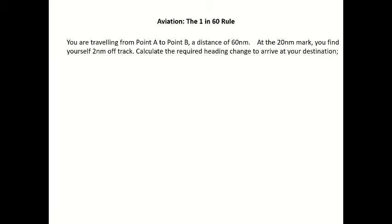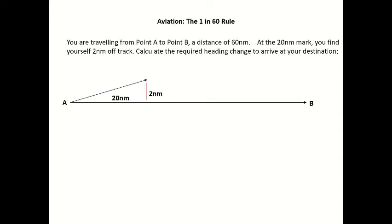Getting a little bit more complex here. Travelling from point A to point B, a distance of 60 nautical miles. At the 20 nautical mile mark, you find yourself 2 nautical miles off track. Calculate the required heading change to arrive at your destination. Unlike the last two examples where we just wanted to know our track error, with this example we actually want to find out what heading change we need to do to arrive back at point B. So draw it out: point A to point B, at the 20 nautical mile mark we're 2 nautical miles off track, giving us 40 miles left to run to point B.